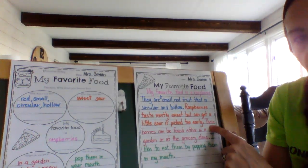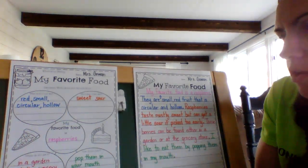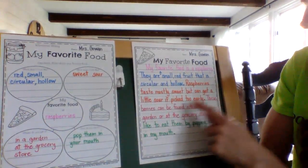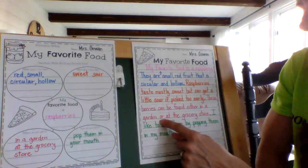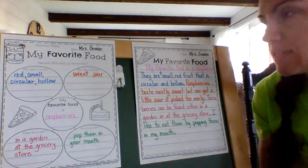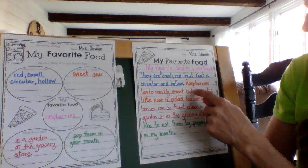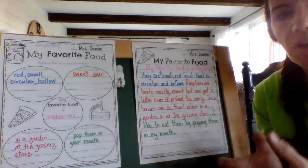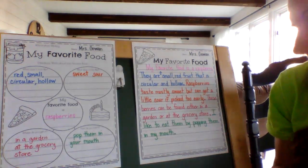My next sentence starts with 'these' — it's for where did you get them. I get them in a garden or at the grocery store, so my sentence says: these berries can be found either in a garden or at the grocery store. I'm not starting every sentence with 'raspberries,' so try to change that first word of your sentence each time.